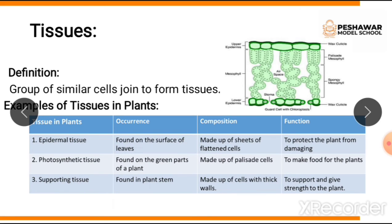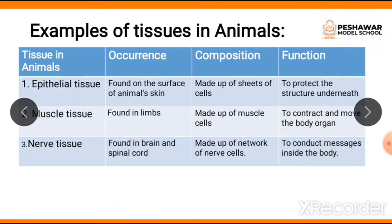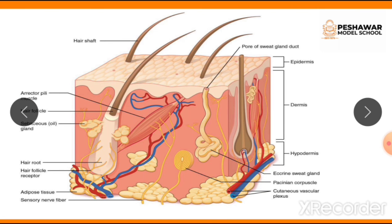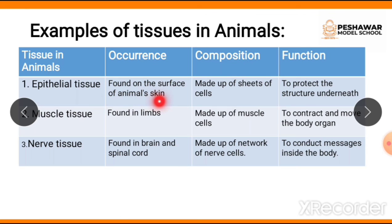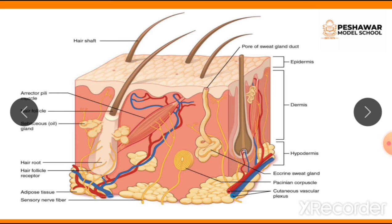Those were the examples of tissues in plants. Now we will discuss tissues in animals: epithelial tissue, muscle tissue, and nerve tissue. We will discuss their occurrence, composition, and function. Epithelial tissue is found on the surface of animal skin. Just as plants have epidermal tissue on the outer layer, animals have epithelial tissue. In the diagram this outer layer is labeled as epidermis.